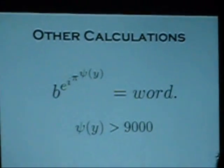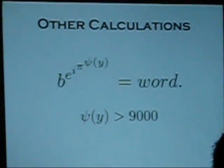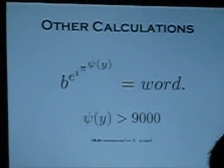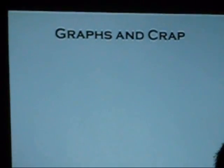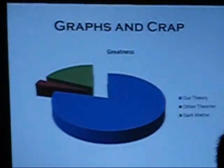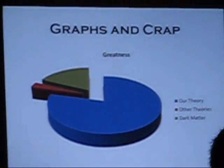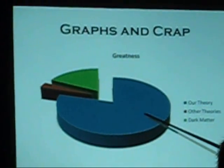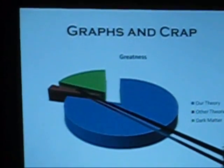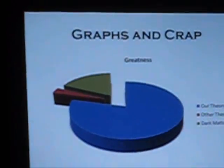We also discovered that this psi of y equation is over 9,000. This is known as Murphy's Law. They make any presentation better. This is the greatness level — that's our theory, this is all the other theories, and this is dark matter. We don't really know what it really is or what's supposed to go there — we're just using dark matter right now.